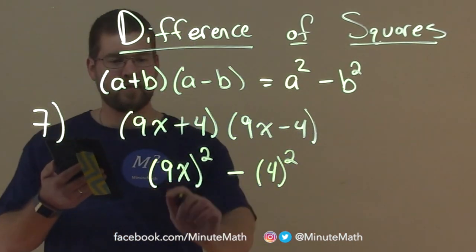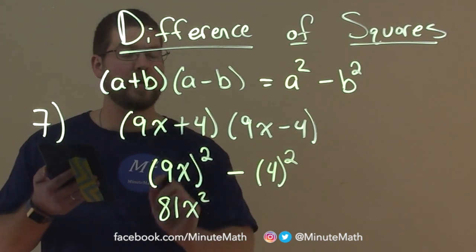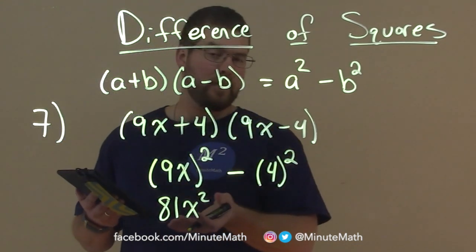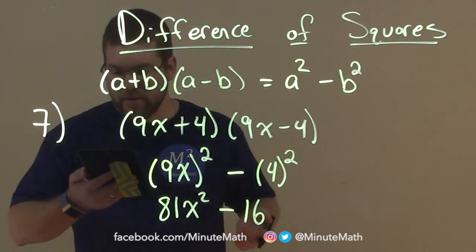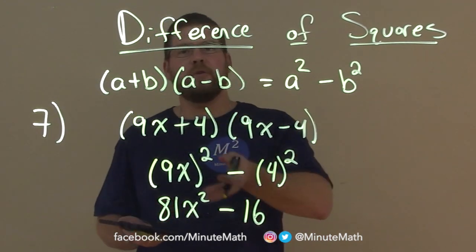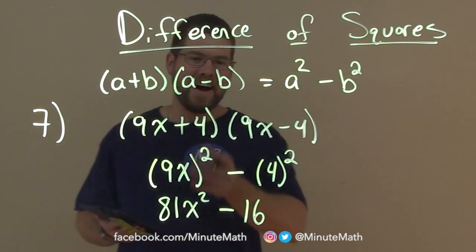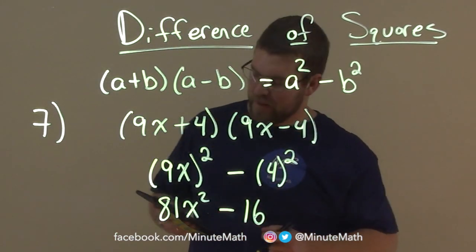Now let's simplify. (9x)² is 81x². Remember the squared goes to the 9 as well. 9 squared being 81, and then 4 squared is 16, and there we have it. You have now just simplified your first difference of squares. So pat yourself on the back for that one.